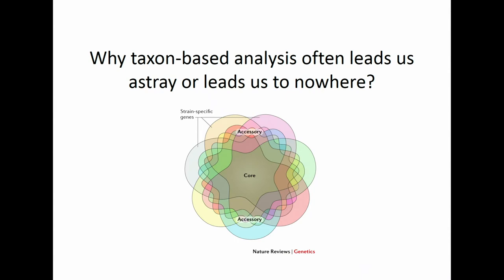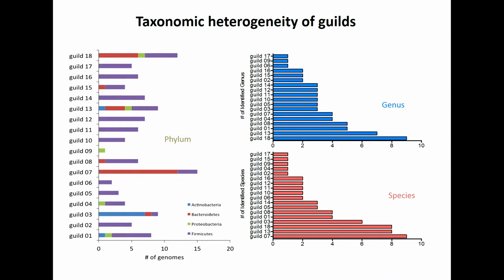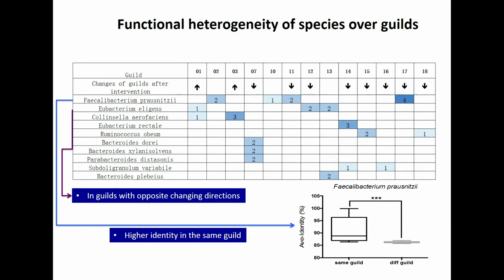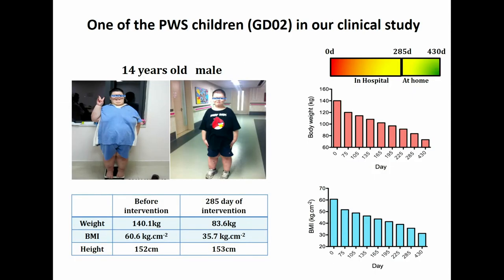Currently, many data analyses in the microbiome field use taxon-based analysis at genus, family, or phylum level between disease and health. But this is a problem: bacteria form functional groups — they work together not based on taxonomy but based on function. Some guilds have members from four different phyla; others from one. So if you do taxon-based analysis, you introduce a lot of noise. Even within the same species, like Fecalibacterium prausnitzii, we assembled nine genomes that fall into four different guilds — meaning members of the same species don't behave the same. We need to go down to the strain level.